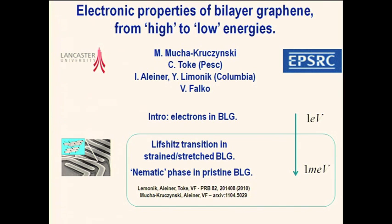The first is the Lifshitz transition in the electronic band structure, which consists in the change of the topology of the electron Fermi surface which can be controlled and stimulated by strain in bilayers. The second is an alternative which results in exactly the same change in the band structure, consisting in a phase transition in the electronic liquid itself.